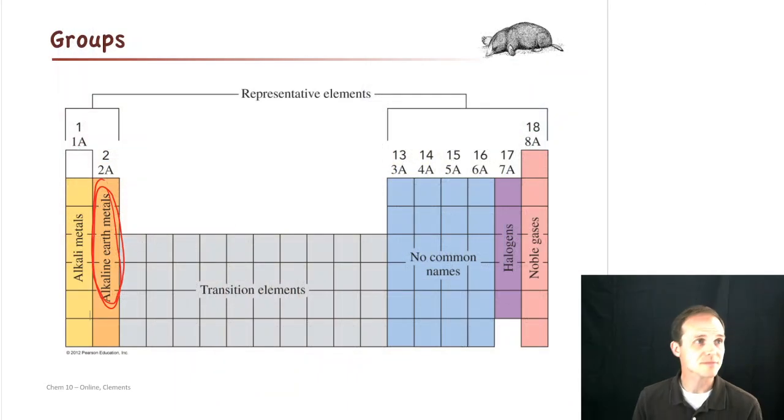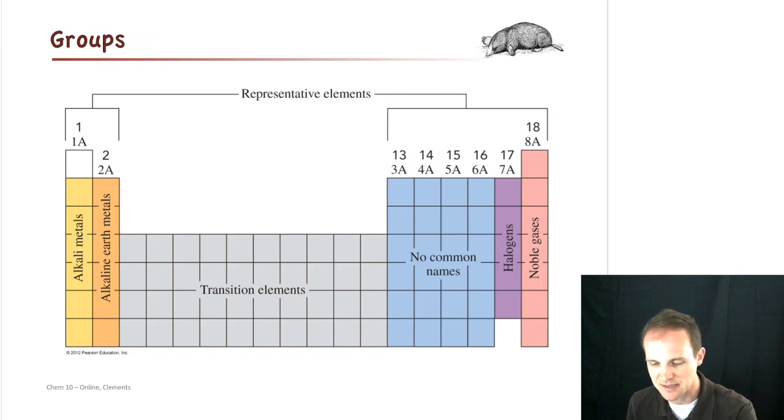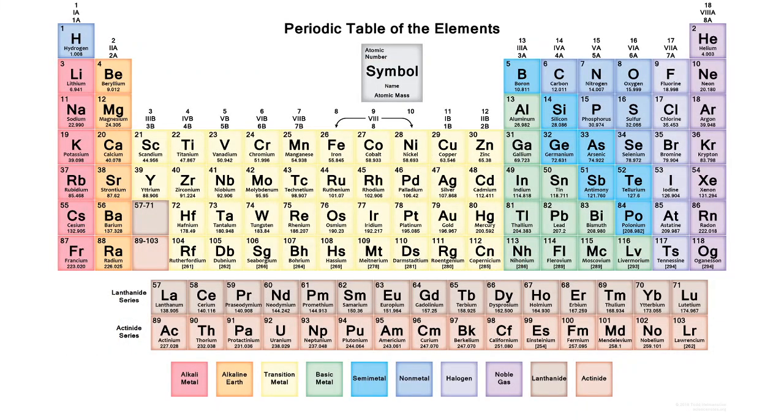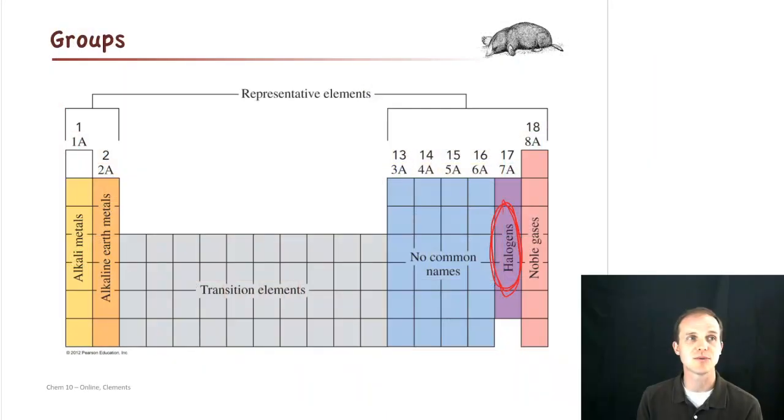Then we're going to jump over to the right-hand side of the periodic table and talk about the halogens here. Now, what are the halogens? They're the ones in the column just to the left of the right-hand side of the periodic table. And if we look here, we're talking about the column that has F-C-L-B-R. Fluorine, chlorine, bromine, iodine, acetine. Those are the ones we're talking about for the halogens. And again, they're grouped that way because they have similar chemical properties. All the halogens react in generally a very similar way.